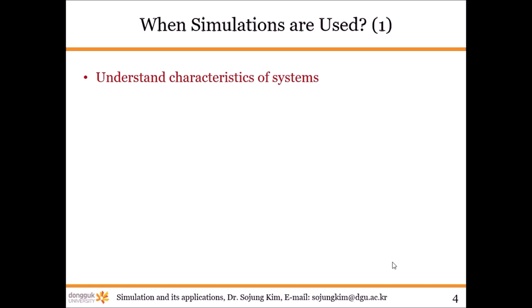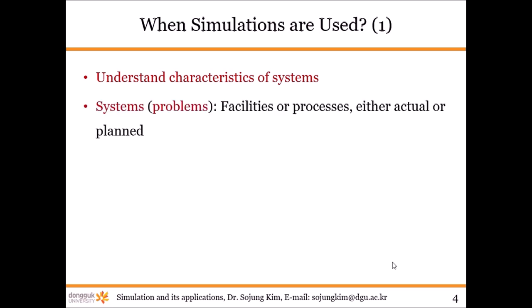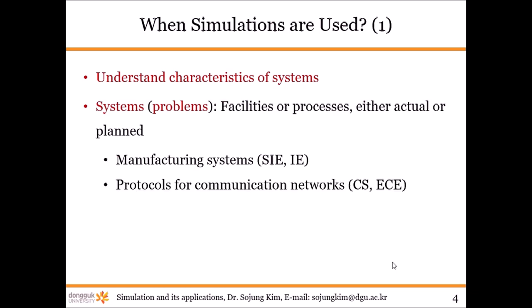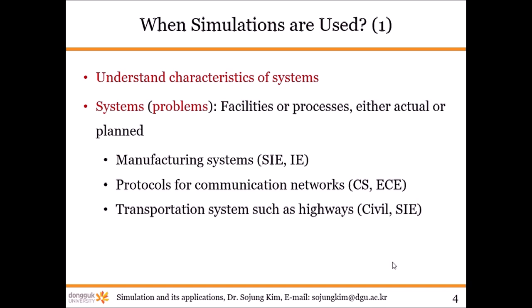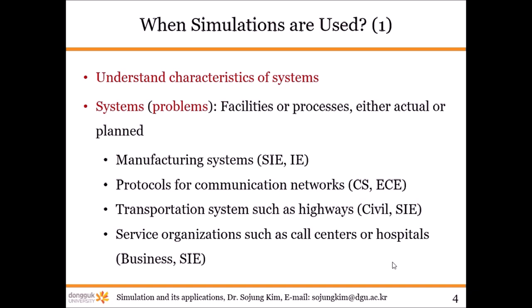So when simulations are used — you may wonder why we need to learn about simulation modeling. Let's look at the characteristics of a system first. Usually a system is a combination of multiple processes or facilities. It can be actual or planned. Manufacturing systems can be one example. Protocols for communication networks and transportation systems — like buses and subways — can also be systems. Service organizations such as hospitals or call centers are systems too. Systems are everywhere, and our major is Industrial and Systems Engineering, so we deal with systems all the time.